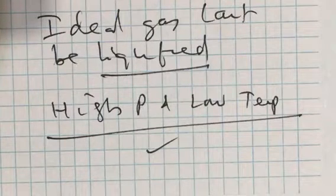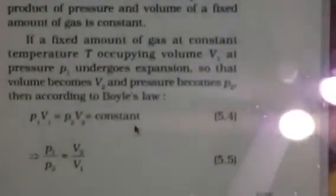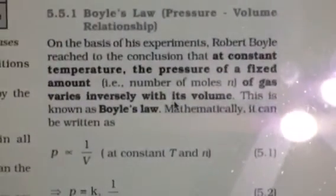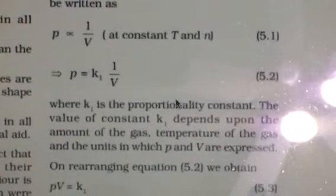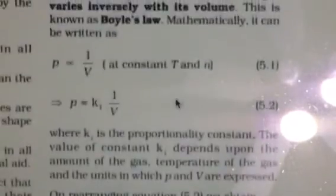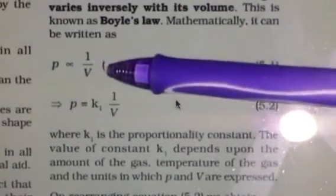The first gas law which we are going to study is Boyle's law. For a fixed mass of a gas, the pressure is inversely proportional to volume, which we write as P is inversely proportional to V.